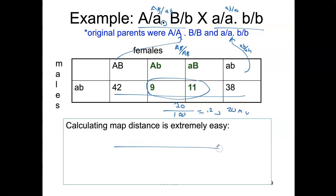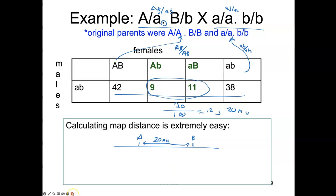So you would draw your chromosome and mark the A gene and the B gene. The way we show map units, you can do it a number of ways, but I like the double-headed arrow — the two lines indicate the positions of the genes — and then you just put 20 map units.